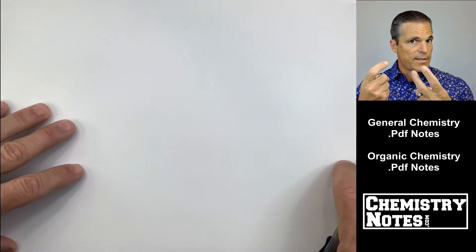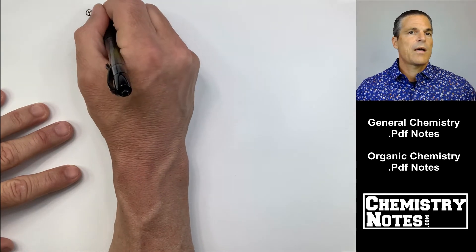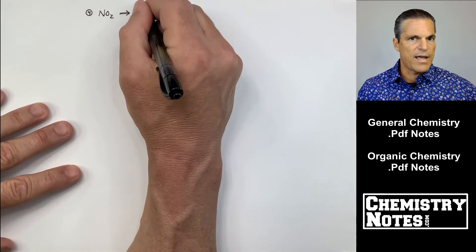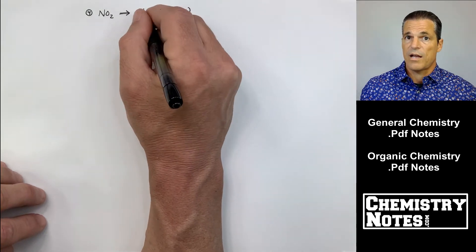We end up with an empirical formula of NO2. NO2, this is my empirical formula. If I add up a nitrogen and two oxygens on the periodic table,